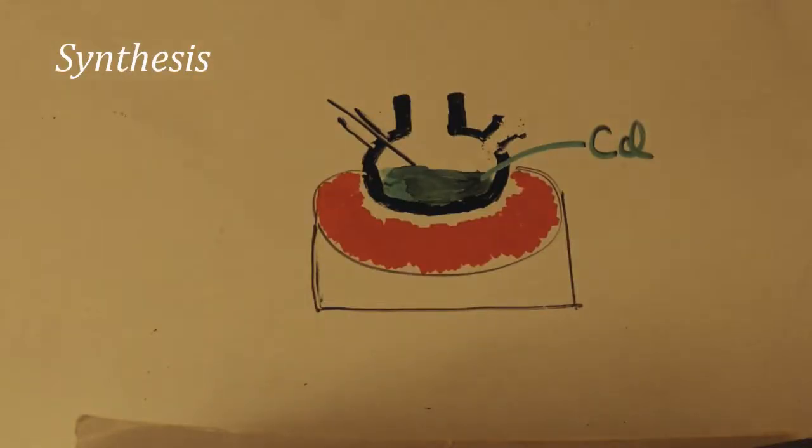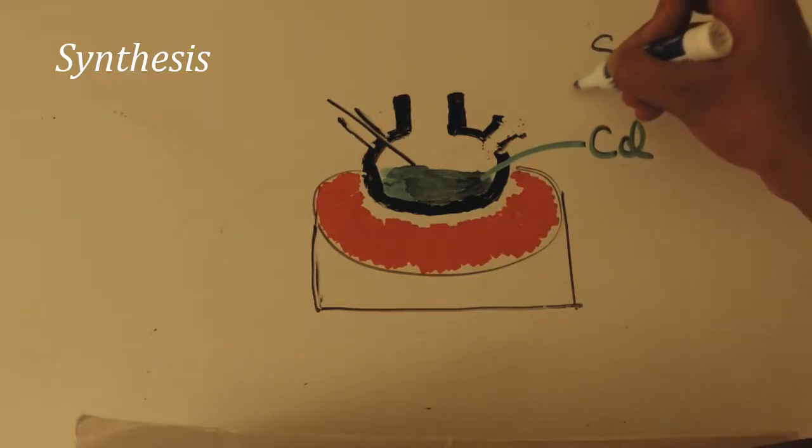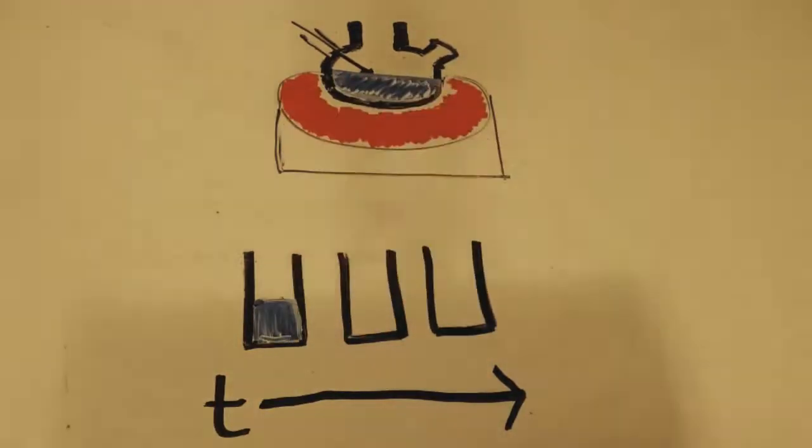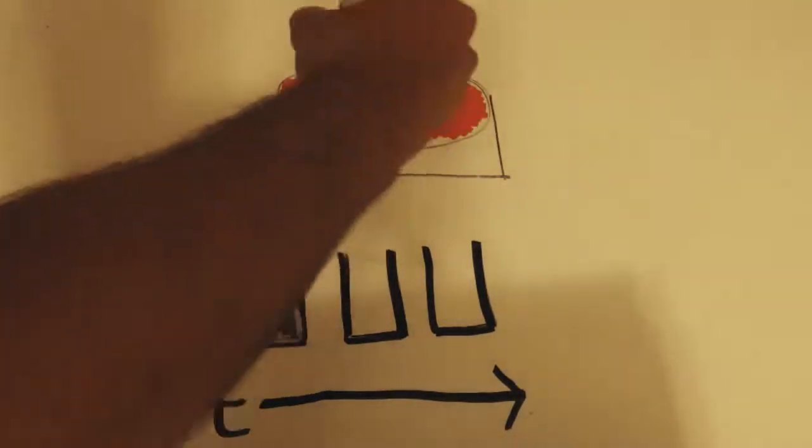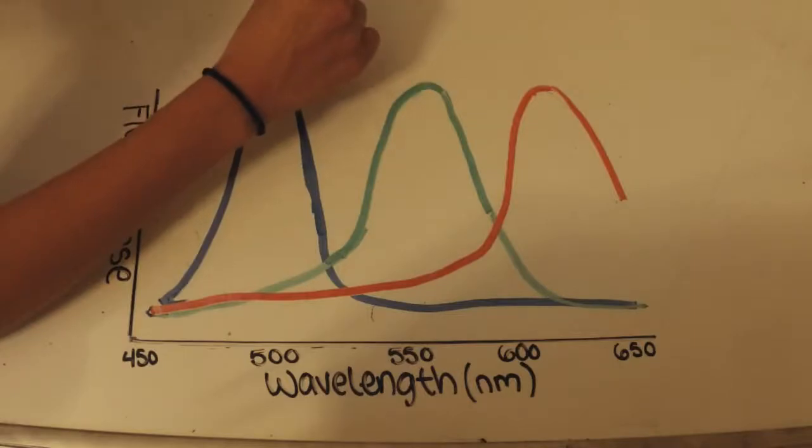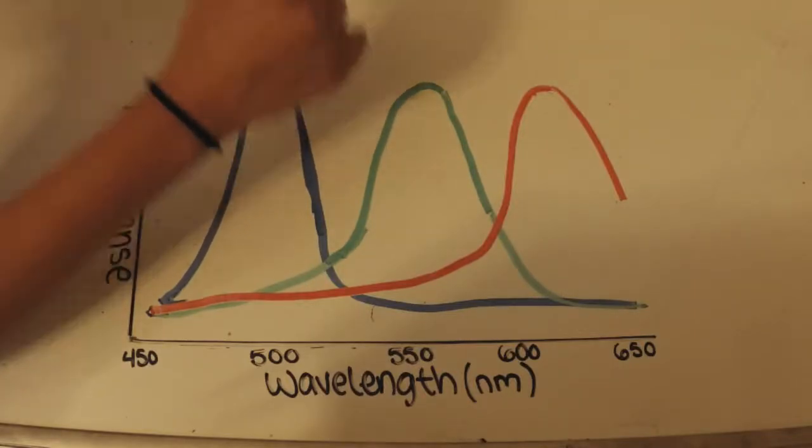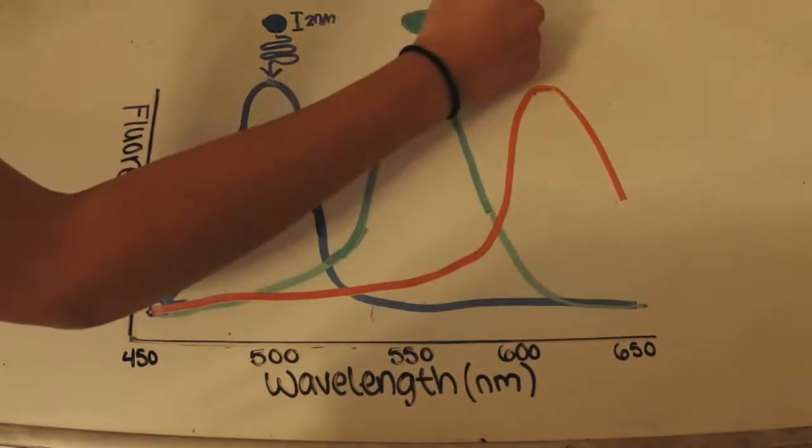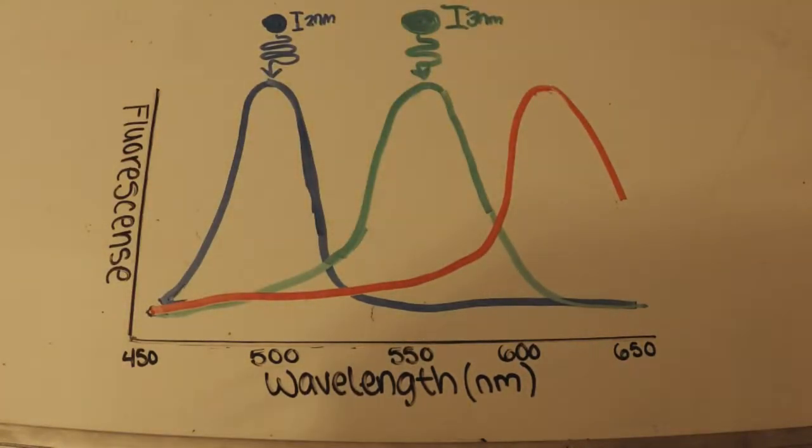We can control the size of the quantum dots directly by how we make them. A simplified version of the chemical reaction to make quantum dots starts out by heating up cadmium oxide to a very high temperature. Selenium is then added to the solution and we take out samples over time. The longer the crystals sit in solution, the larger they become. As you can see, the size of the wavelength correlates to the size of the dot: blue dots are the smallest at two nanometers and shortest wavelength, green dots are three nanometers, and red dots are the largest at six nanometers and have the longest wavelength.